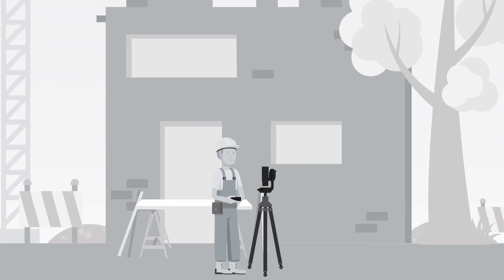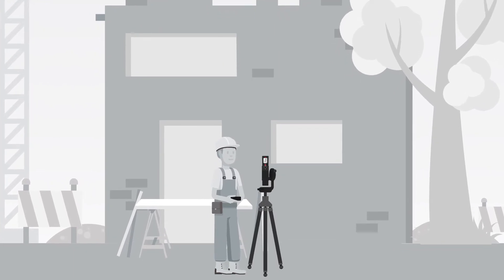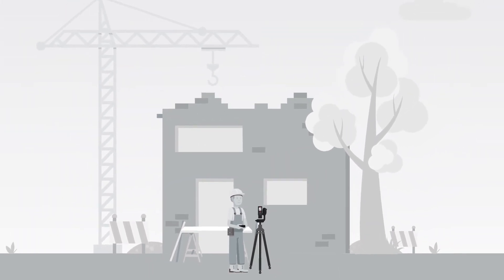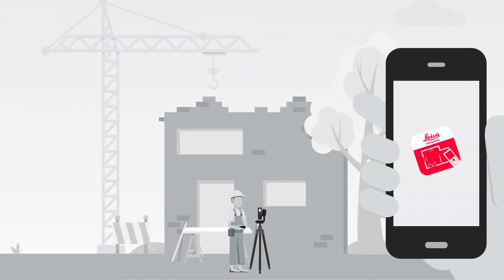Simply position your tripod on sturdy ground and attach your Disto X4 to the DST360 adapter. Now open the Disto Plan app on your smartphone and connect it to your Disto.